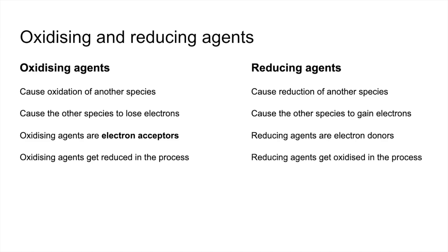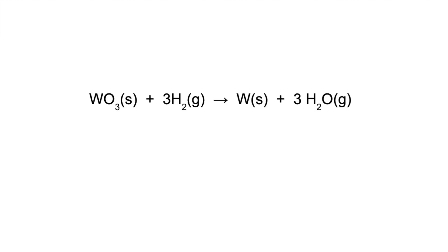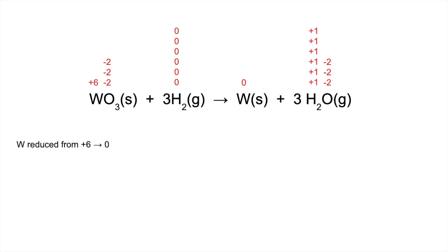Reducing agents get oxidized in the process because they're giving away electrons and therefore losing them. To put that into practice, we'll identify the oxidizing and reducing agents in this redox reaction. First, putting all the oxidation numbers in: the tungsten oxidation number has gone down, reduced from plus six to zero. So W6+ in WO3 is the oxidizing agent — it's accepting six electrons and being reduced to tungsten metal.